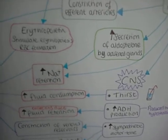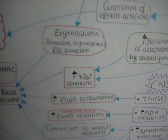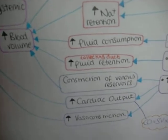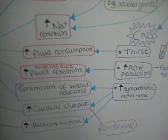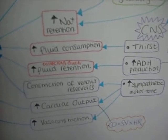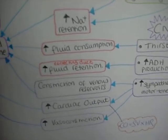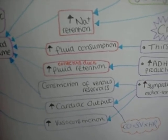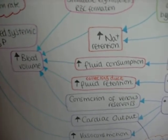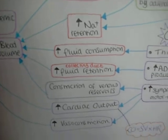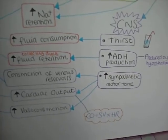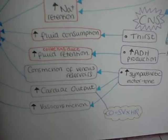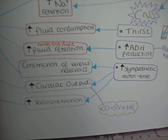Thirst obviously increases fluid consumption, which directly increases blood volume. ADH production increases fluid retention by the collecting duct of the kidneys, also increasing blood volume. Increased sympathetic motor tone causes constriction of venous reservoirs.